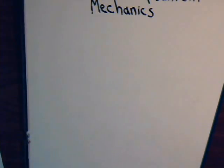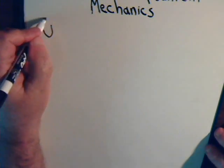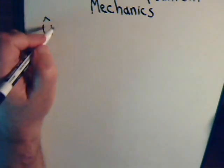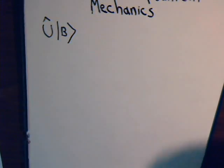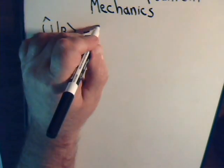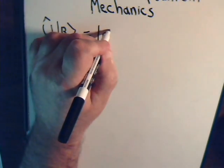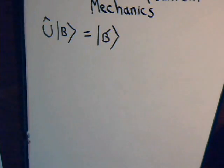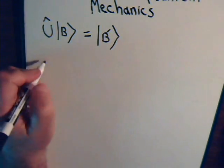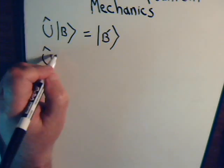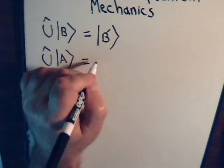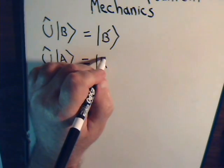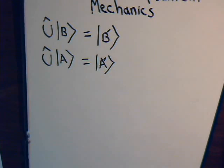To lead into that subject, let's say that we have a particular type of linear operator — we'll call it U — and say it operates on a ket vector B. When we do that, we get a new ket vector; we'll call it B prime. And the same operator operates on another ket vector A to give us a new ket vector that we will call A prime.